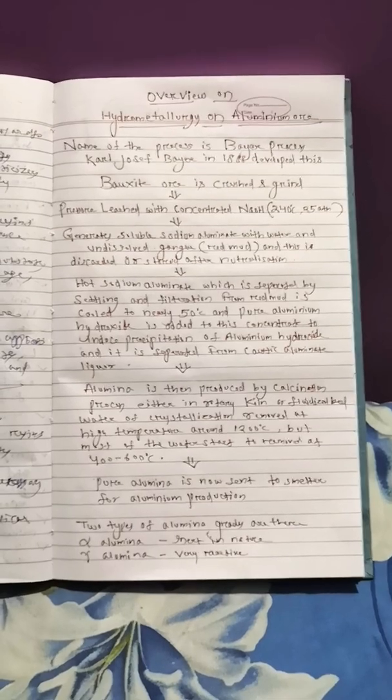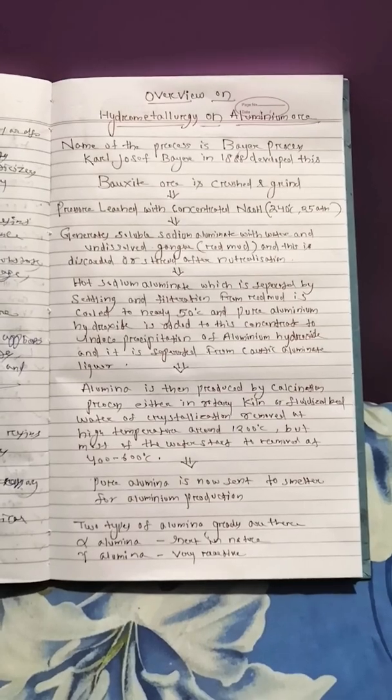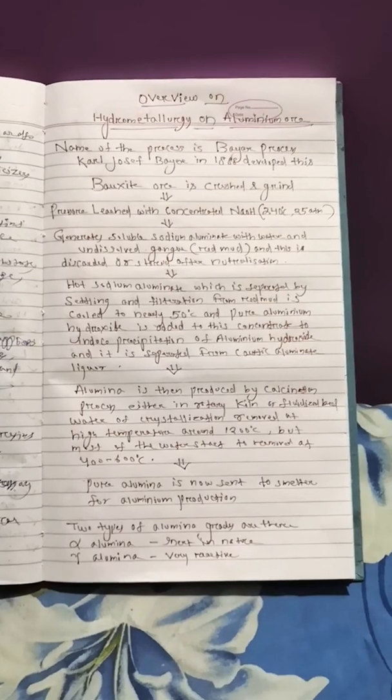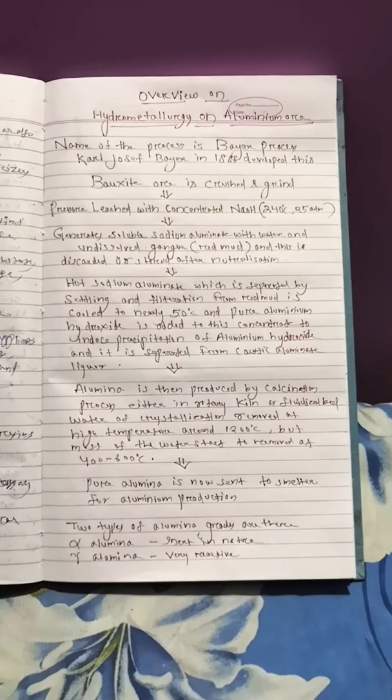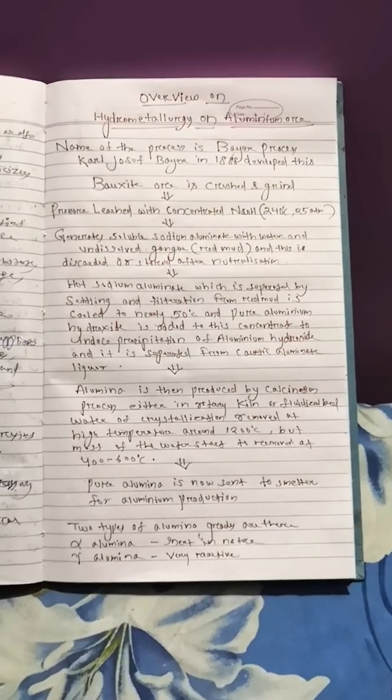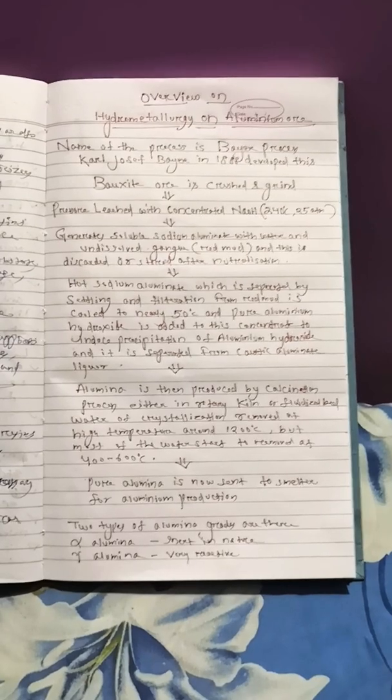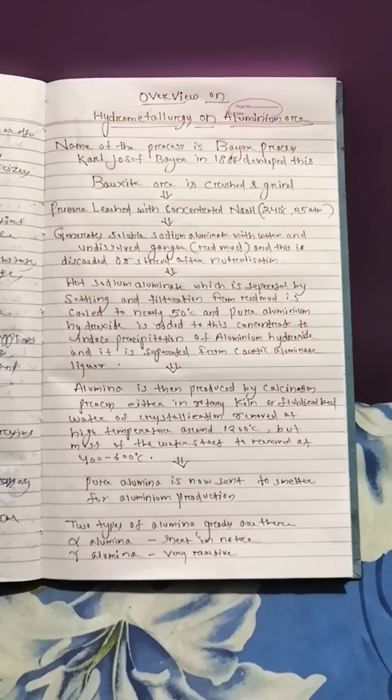The pure alumina obtained is sent to a smelter for aluminum production. There are two types of alumina grades: alpha alumina and gamma alumina. Alpha alumina is completely inert, while gamma alumina is very reactive. Alpha alumina is obtained when alumina is calcined at 1200°C, but gamma alumina is obtained when aluminum hydroxide is heated at 400 to 600°C.